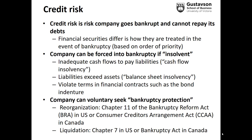There are two different types of bankruptcy in the United States. There is a reorganization, which is called a Chapter 11, and there is a liquidation, which is a Chapter 7. In a reorganization, the company comes up with a plan that it presents to creditors on how it's going to move forward and restructure its debts. In a liquidation, the company is sold — all of its assets by the bankruptcy court.